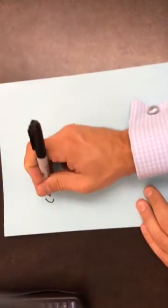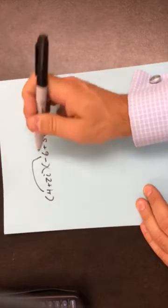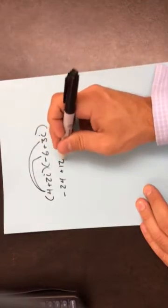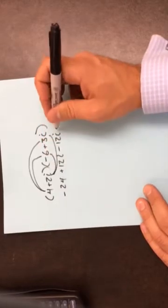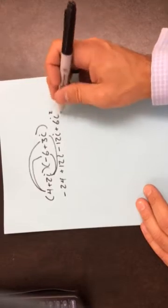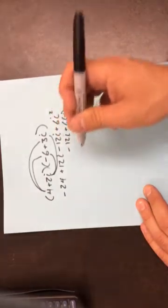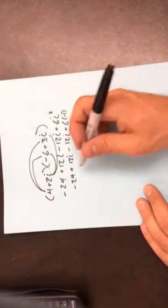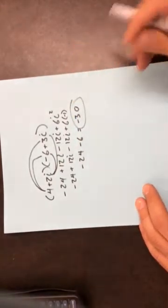Let's do another one. 4 plus 2i times negative 6 plus 3i. Foiling it out: this gives me negative 24, plus 12i, minus 12i, and plus 6i squared. Remember that i squared equals negative 1, so these terms cancel each other out, and 6 times negative 1 is negative 6. So negative 24 minus 6 gives a final answer of negative 30.